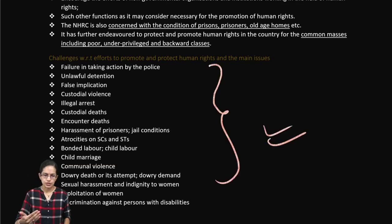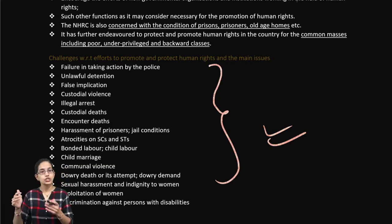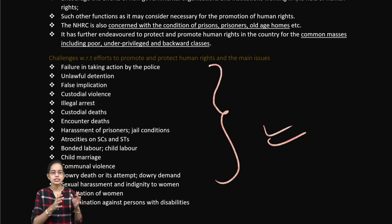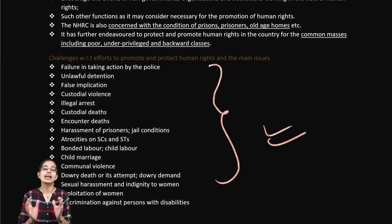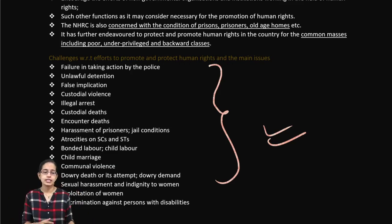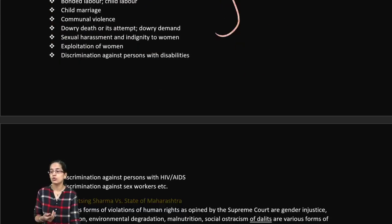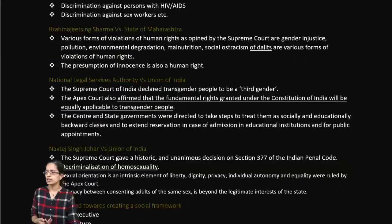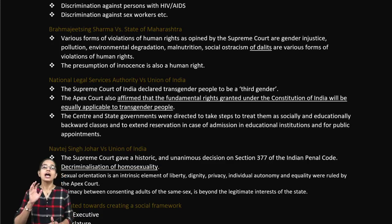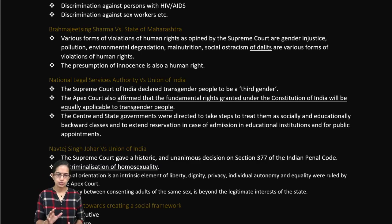Protecting human rights means protecting against atrocities on scheduled castes, scheduled tribes, minorities, communal violence, and child marriages. This also covers unlawful detention, false implications, and various forms of discrimination — including gender discrimination and discrimination against people with disability. Checking and addressing all such discrimination is one of the major issues the NHRC focuses on.